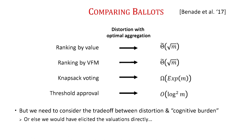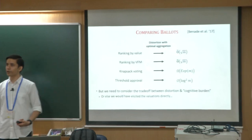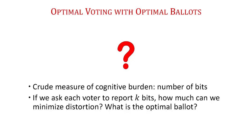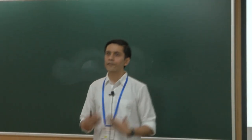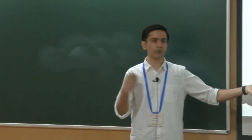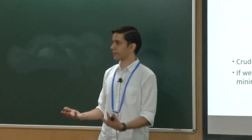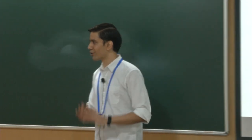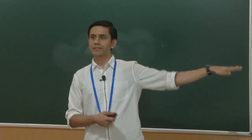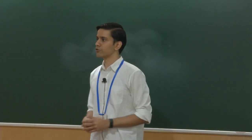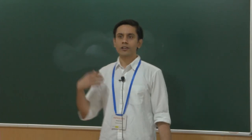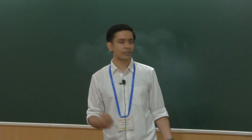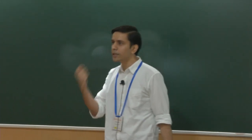Cognitive burden is not easy to measure precisely — it requires psychological and sociological perspectives. In this work we take a crude measure: the number of bits a voter needs to communicate to convey preferences in a given format. Using this measure, we can ask: if I am willing to ask each voter for just k bits of information about their valuation function, how much can I minimize distortion? And what is the optimal ballot design subject to this budget of k bits?